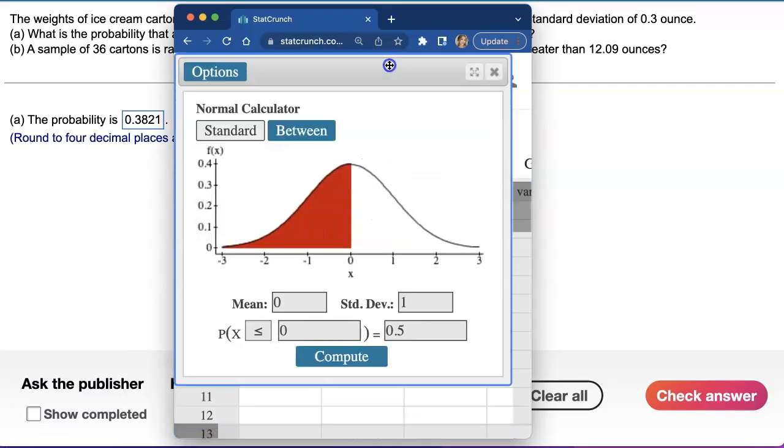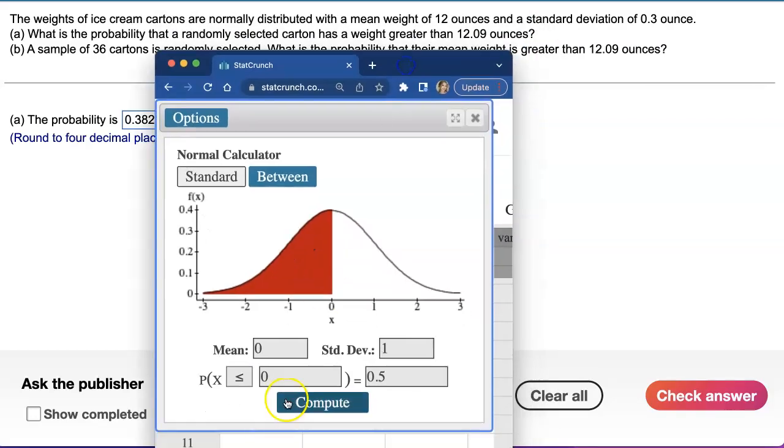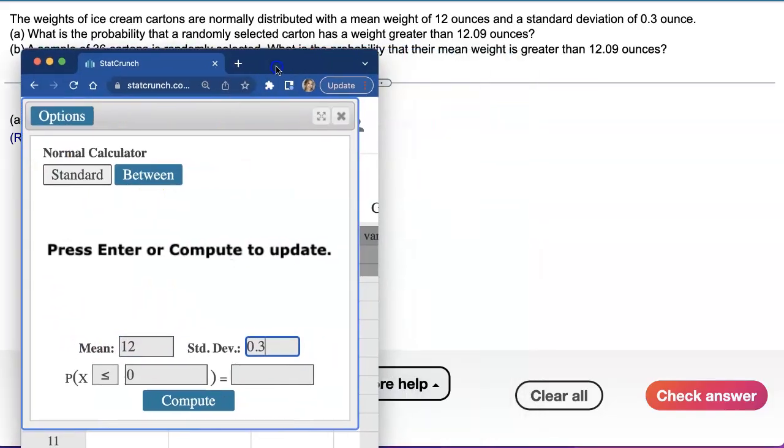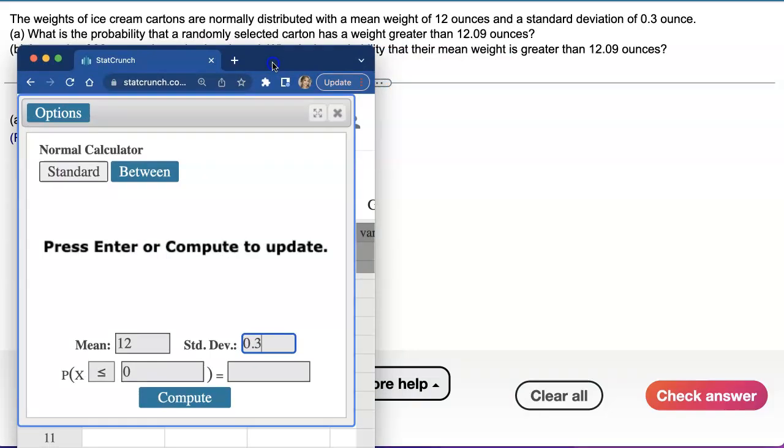Enter those numbers given to us: mean is 12, standard deviation is 0.3. Part (a) is asking us to find the probability that a randomly selected carton, so picking just one, right?